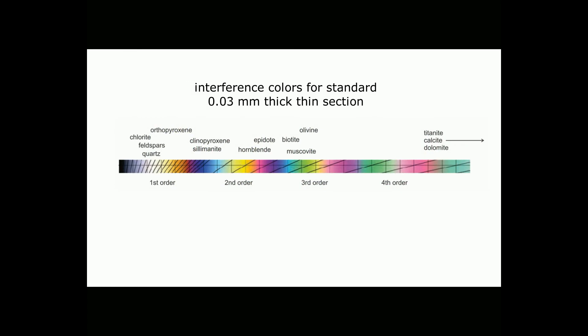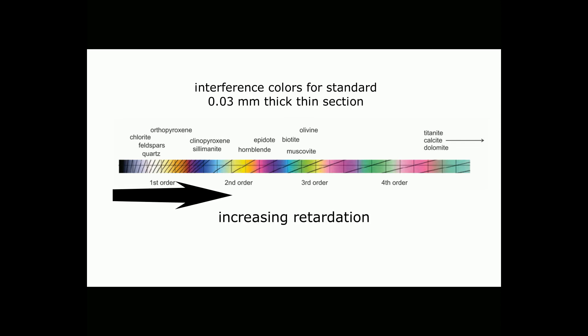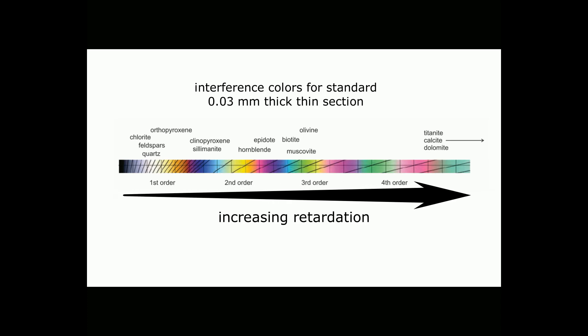Normal thin sections are 0.03 millimeters thick, which is equivalent to 30 microns. This is a slice through the Michel-Levy chart for that thickness, with mineral names showing typical maximum interference colors for common minerals. Very low-order colors corresponding to retardation of less than about 200 nanometers are black, gray, and white. With slightly greater retardation, we see yellow, orange, or red interference colors, and with even greater retardation the same colors begin to repeat. As we move to higher and higher order, the colors become more pastel and washed out. The colors repeat every 550 nanometers, which is the average wavelength of white light.